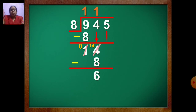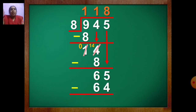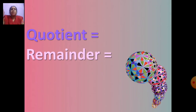Now you will bring 5 down. How much is the number now? 65. Now you have to take less than 65 from table of 8. Which number will you take? 8 eights are 64. So you will write 8 up, 64 down. Draw the line, put the sign of minus, and subtract. 5 minus 4 is 1, 6 minus 6 is 0. Now you cannot subtract further because 8 is big and 1 is small, so you stop here. The quotient is 118 and the remainder is 1.